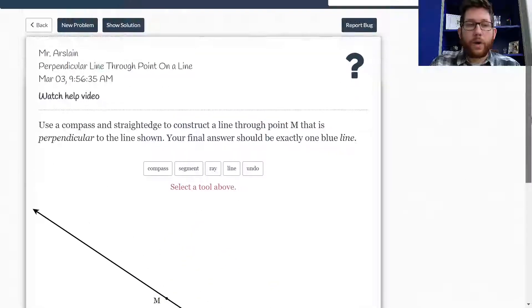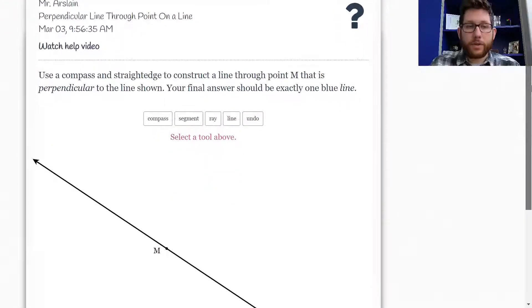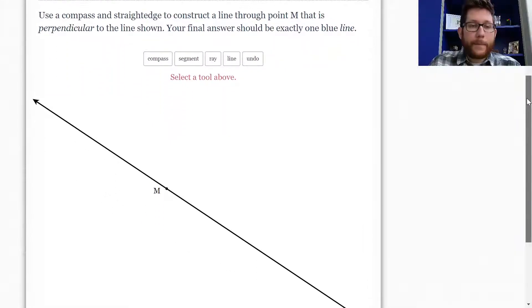There is a very similar construction that deals with what happens when we have a line with a point not on the line. How do we make that perpendicular line? In this case, the point is on the line, and the construction is very similar but a little bit different.